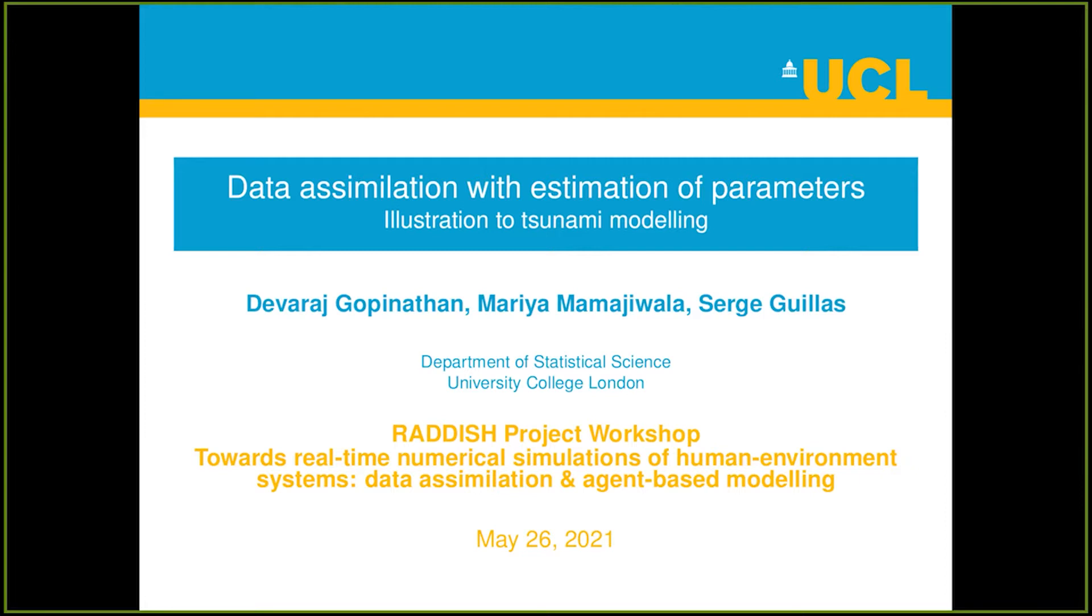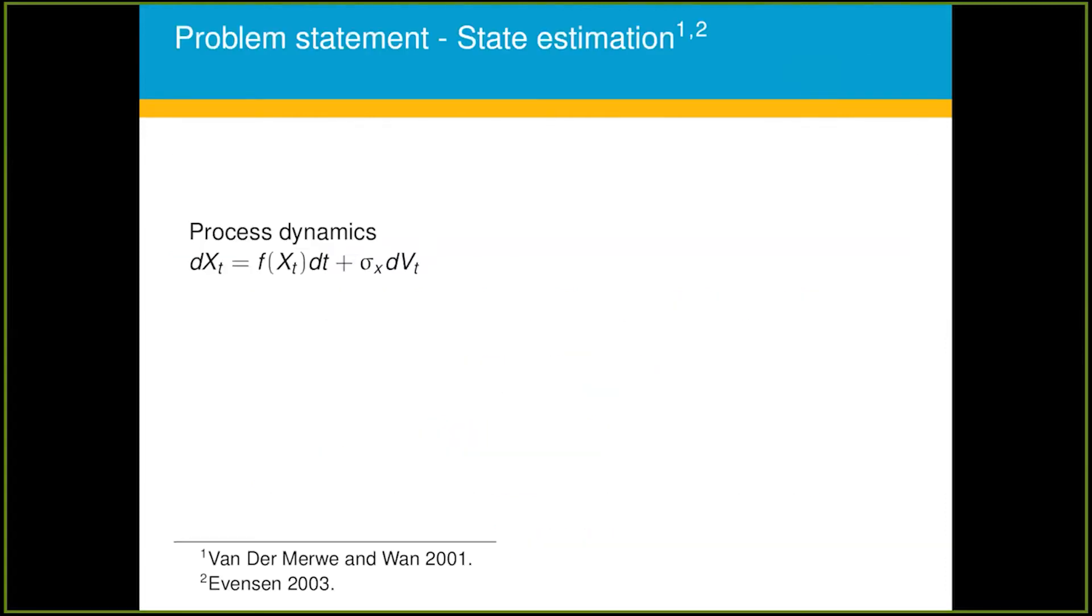This is a very simple process dynamics. X is the state, which in our case for the tsunami is the wave height and the two velocities in the x and y direction. Sigma X is the process noise and f is the model, which is the tsunami numerical model which evolves the states given initial condition. Now the measurements are given usually at sensor locations in C where the measurement takes the tsunami wave height. So the tsunami wave height is recorded at the sensors and this is what the measurement dynamics show.